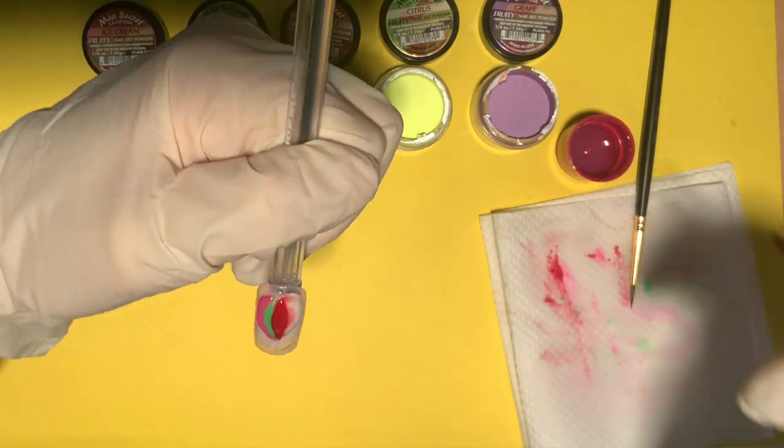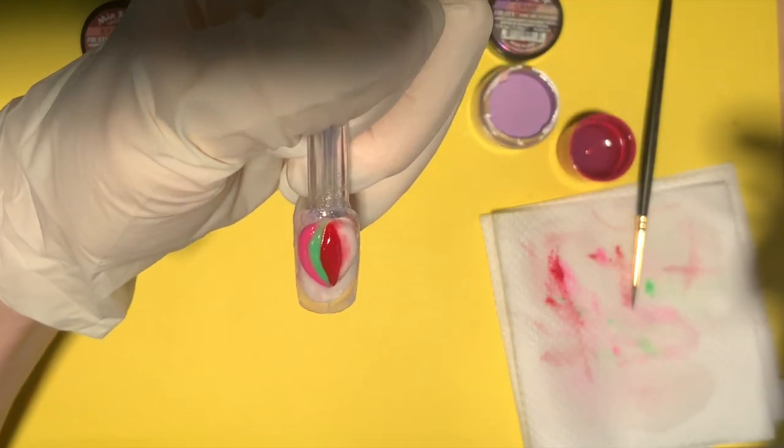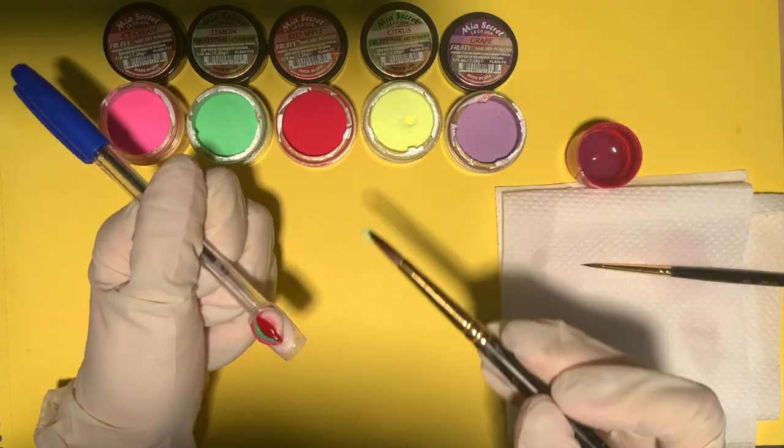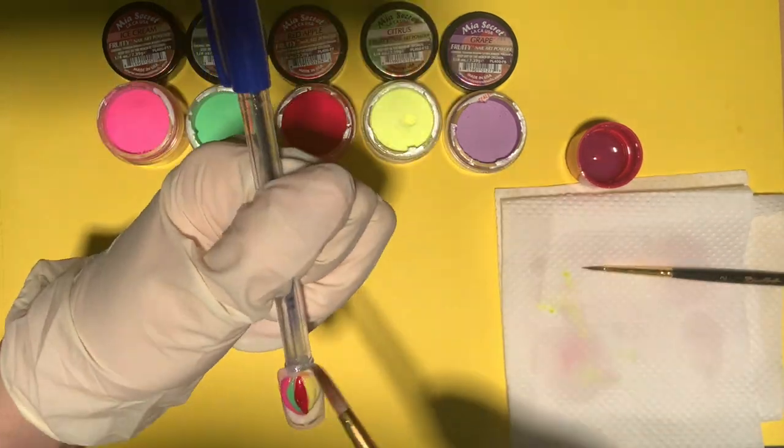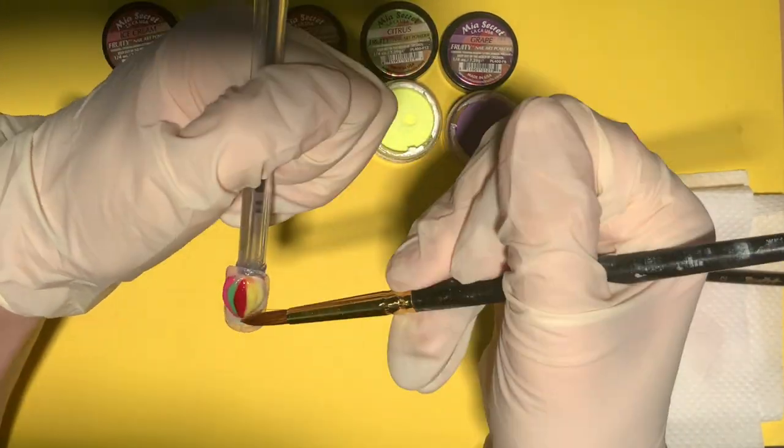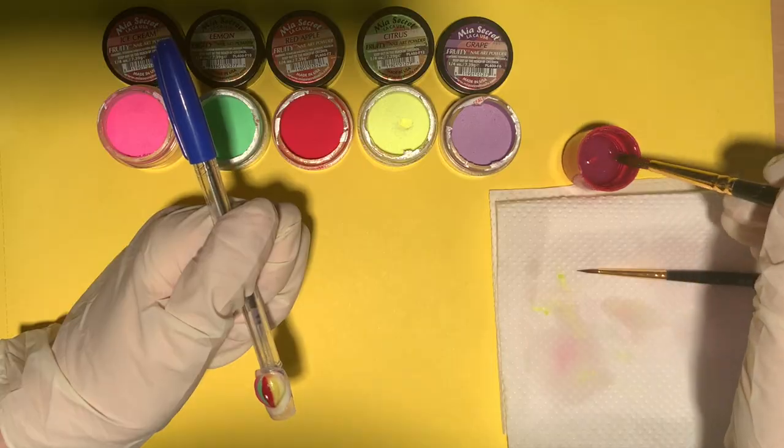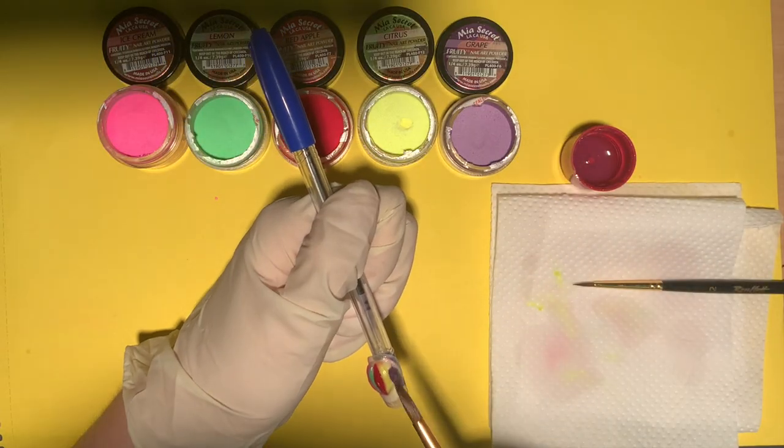Once you are happy with the red, move on to your next color. I chose yellow, and these last two colors will be the banana shape that we did for the first two colors, but flipped vertically. I think the yellow one turned out great. Do the same with the purple as you did with the yellow.